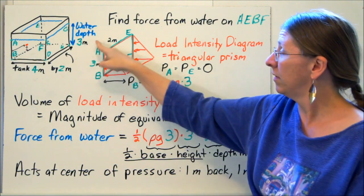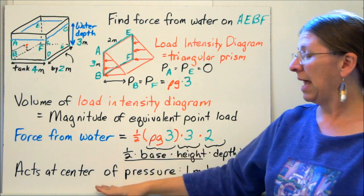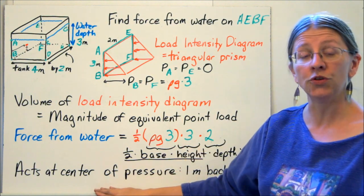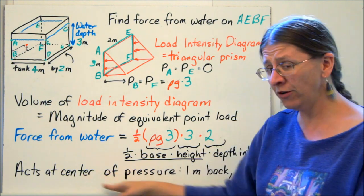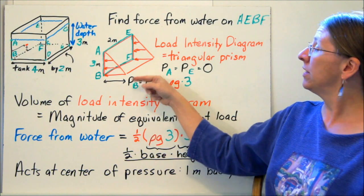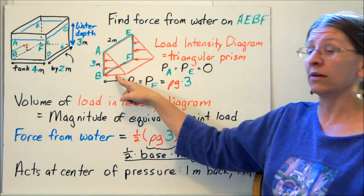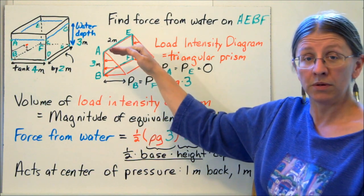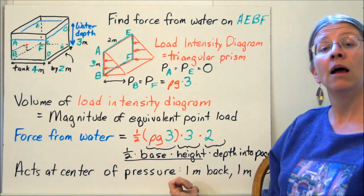Times 2 is the depth end of the page. That's this depth, that distance. That volume is the equivalent point load due to the water. It acts at the centroid of the pressure, the center of the pressure. That's at the centroid of the load intensity diagram. Now this is symmetric front to back, so it'll be in the middle. And it's a triangle, so it'll be a third of the way up from the bottom. So my center of pressure is here, 1 meter back and 1 foot up.